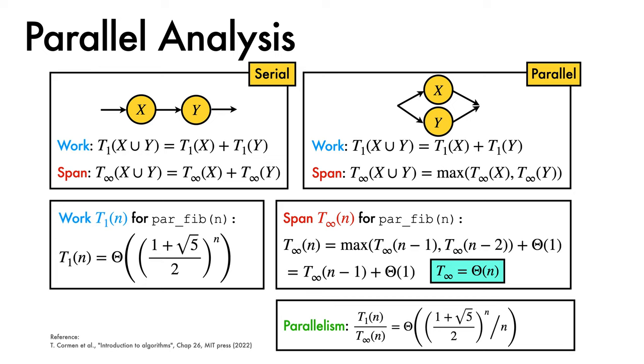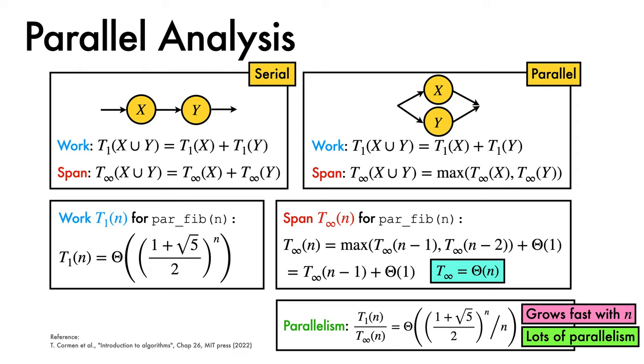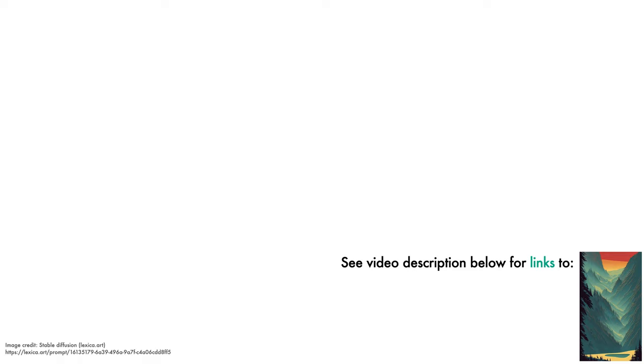This is an expression that grows very fast with n, so our recursion has lots of parallelism when n gets large and we will get significant speedup by adding more processors. In the video description, you can find links to Python code to implement parallel Fibonacci recursion, slides, and references. I hope you have a wonderful day.